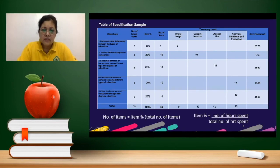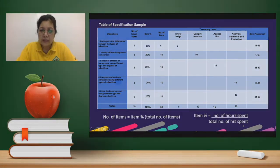So that's it. We have the totals: 5 for knowledge, 10 for comprehension, 15 for application, and 20 for analysis — covering all 50 items. Thank you so much.